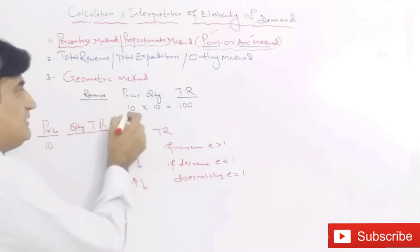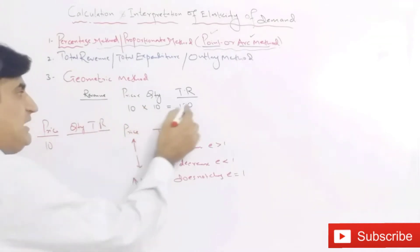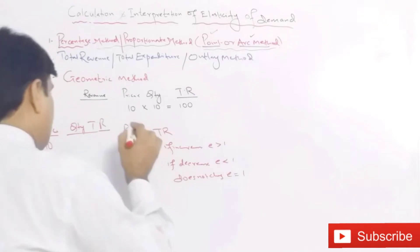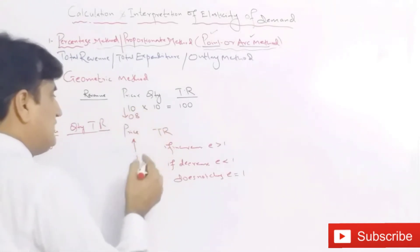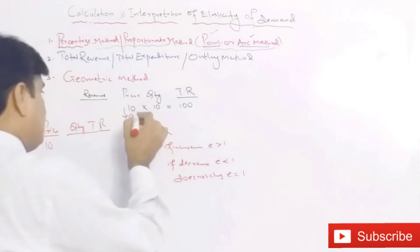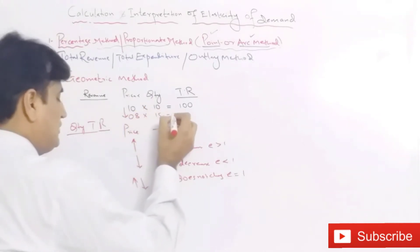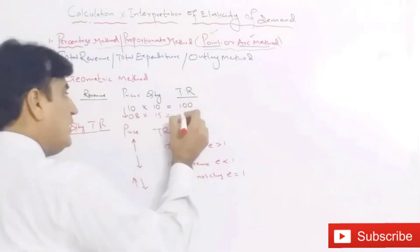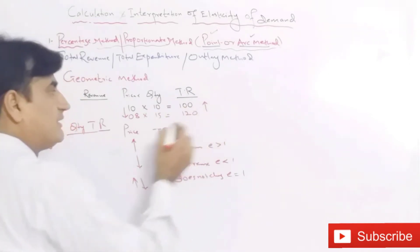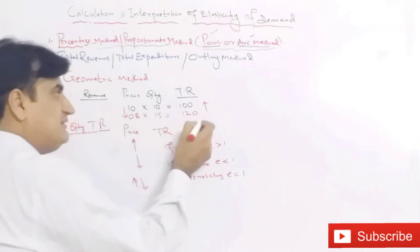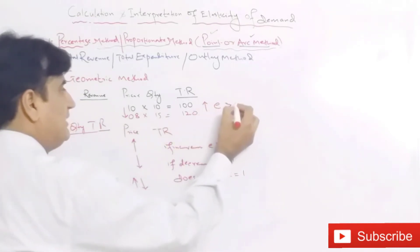For example, when the price is 10, the quantity demanded is 10 and total revenue is 100. When the price decreases from 10 to 8, the quantity demanded increases from 10 to 15, so the total revenue becomes 120 and total revenue increases. If the revenue increases, it means the elasticity is greater than 1.